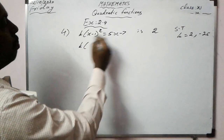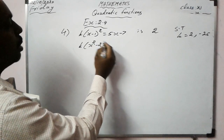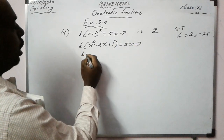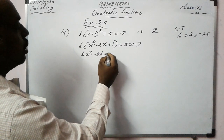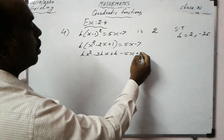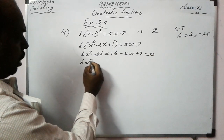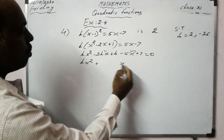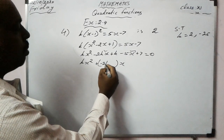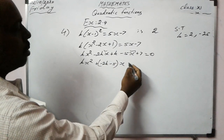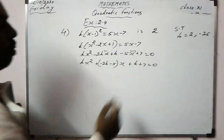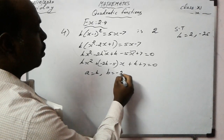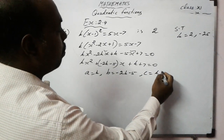Expanding: k(x²-2x+1) = 5x-7 gives kx² - 2kx + k - 5x + 7 = 0, which simplifies to kx² + (-2k-5)x + (k+7) = 0. So a = k, b = -2k-5, c = k+7.